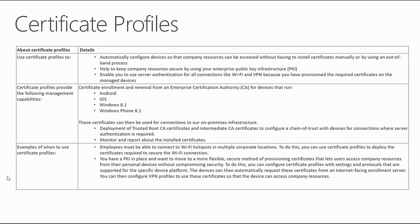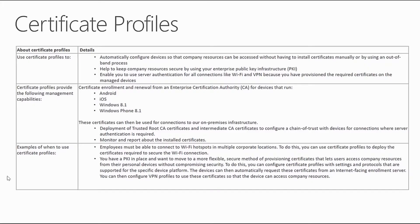We can use this deployment to deploy certificate profiles. With Intune specifically, we can leverage these in a couple of different manners. We can automatically configure devices so that company resources can be accessed without having to install certificates manually on every single device, which can be quite cumbersome when you have all users or your service desk managing every single device. This can also help keep company resources secure by storing your enterprise public key infrastructure trusted root certificate, and enable server-based authentication for both Wi-Fi and VPN profiles on your mobile devices.